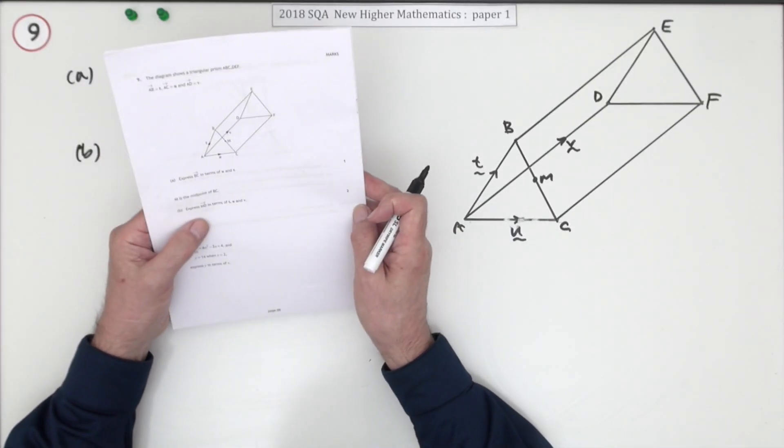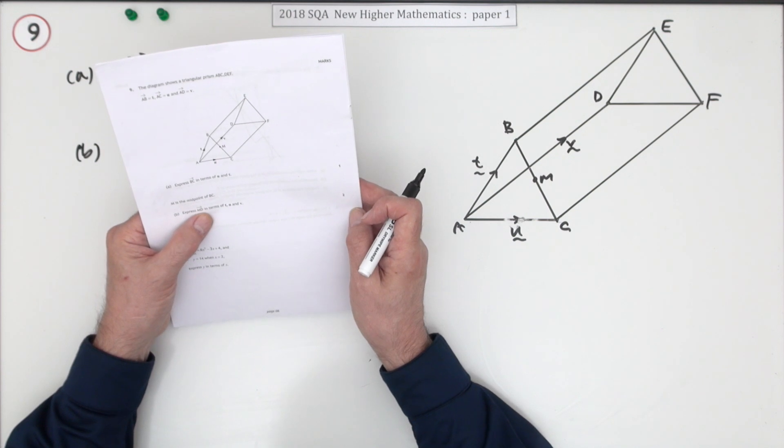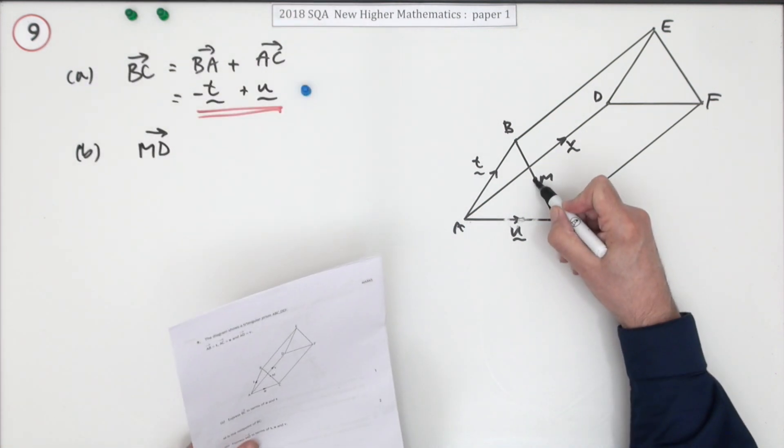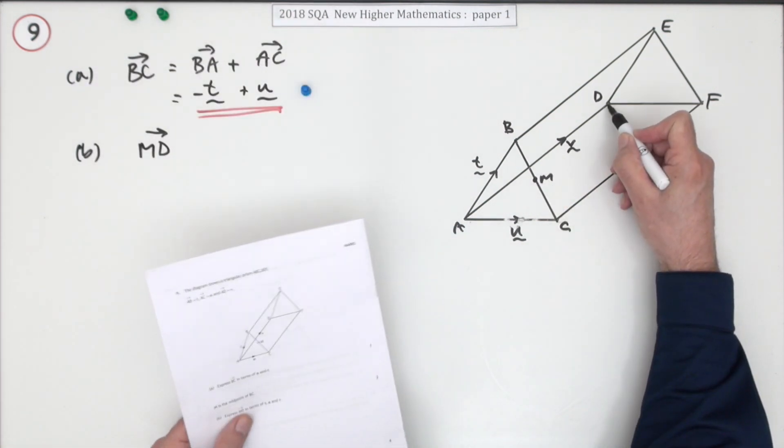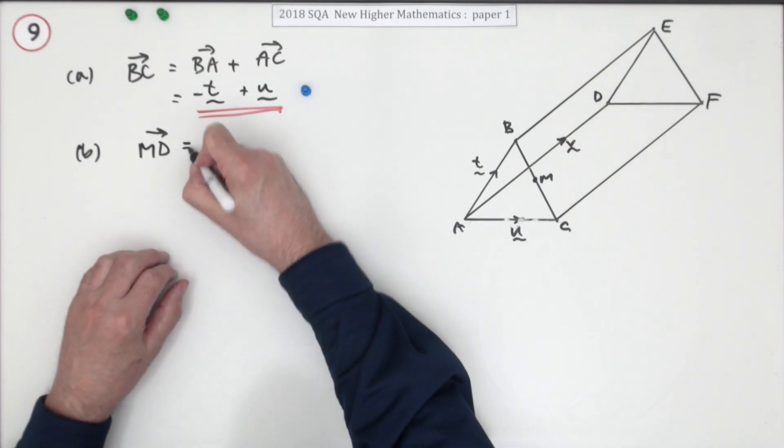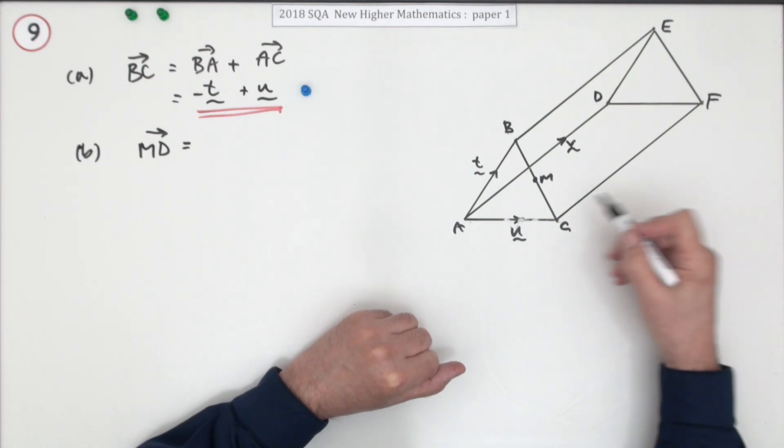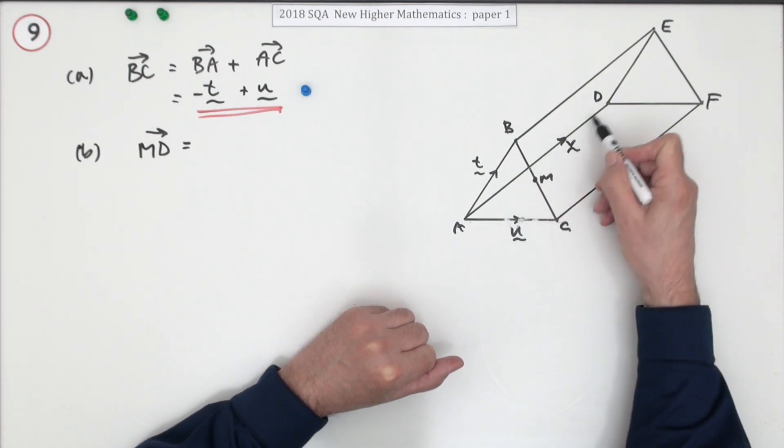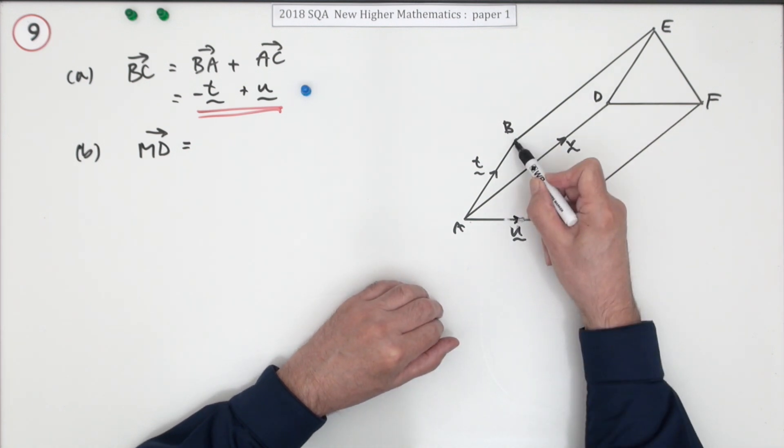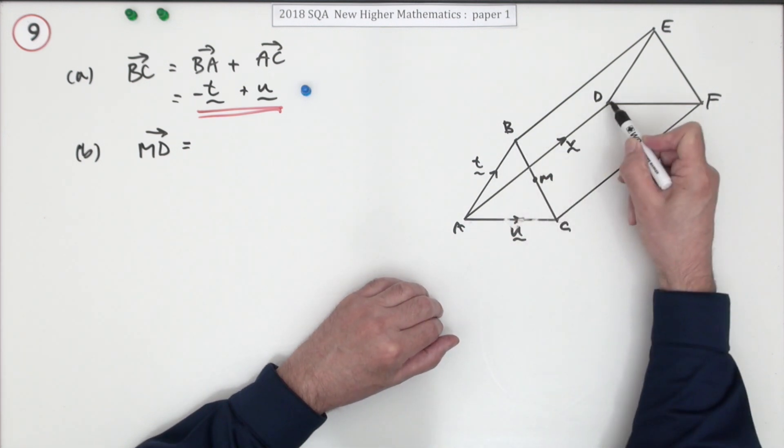Now in part B, same again, only this time you want MD. You want to start at M and finish at D. Well, what path could you follow then? If you have to start at M to get to D, well, you could go up to B first of all, down to A and along to D.